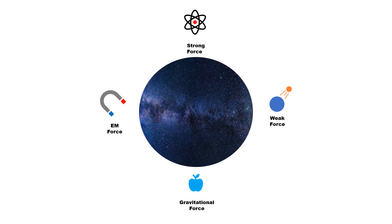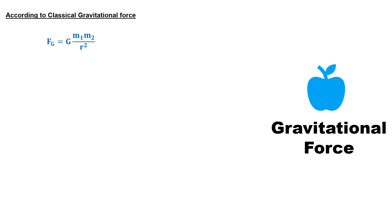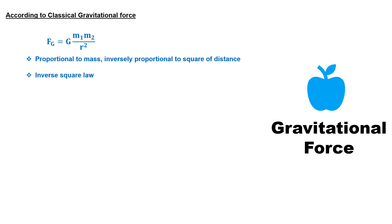Let's first talk about gravitational force. Gravitational force is our oldest known force. According to Newton's classical gravitational force, this force applies between two mass particles. The magnitude is proportional to the mass of both particles and inversely proportional to the square of their distance. The gravitational force is an inverse square force, which means its strength decreases as the distance between the particles increases.